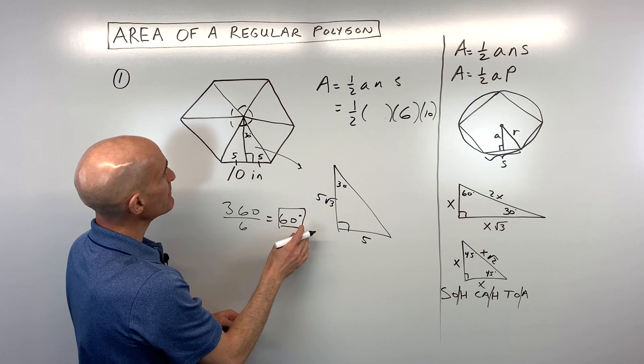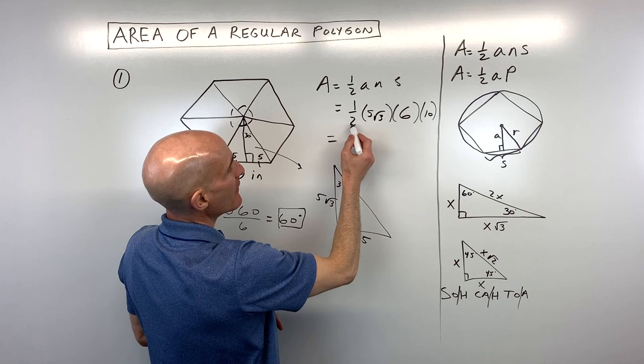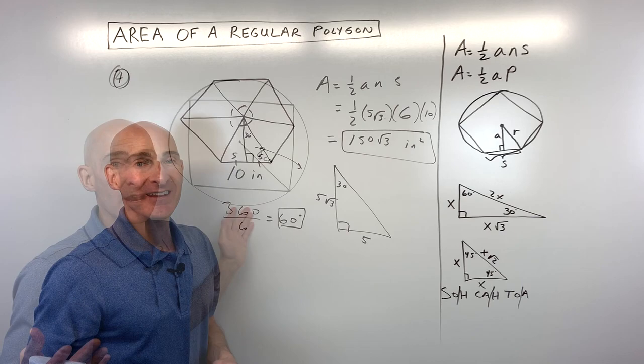Putting that into our formula: 6 times 10 is 60, times one-half is 30, times 5 is 150 square root of 3. So the area is 150 square root of 3 inches squared.